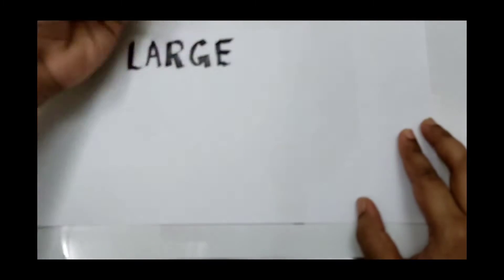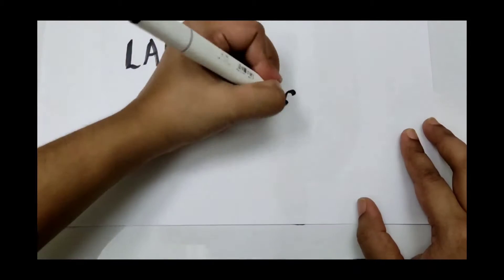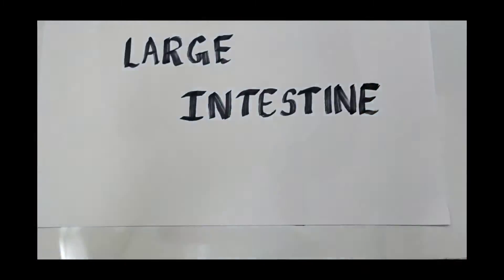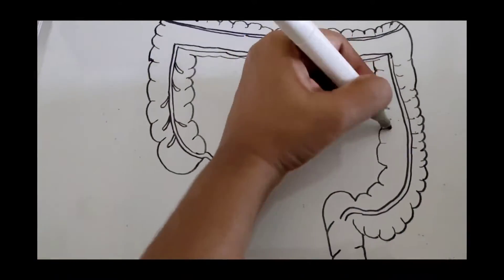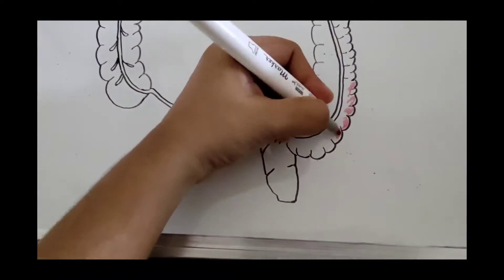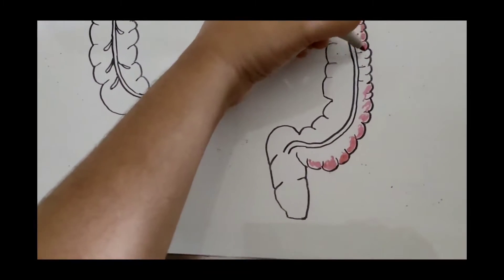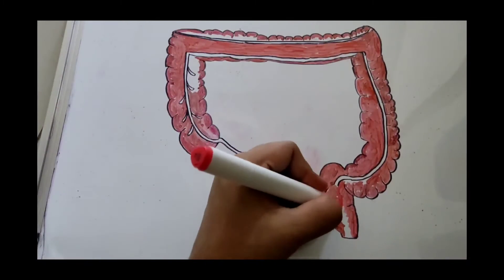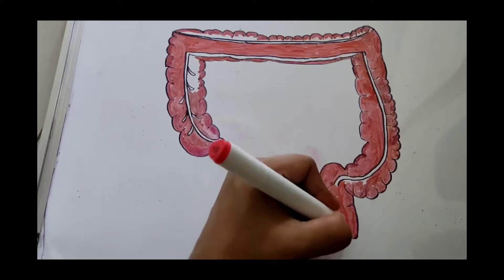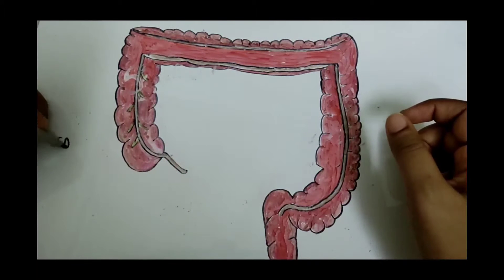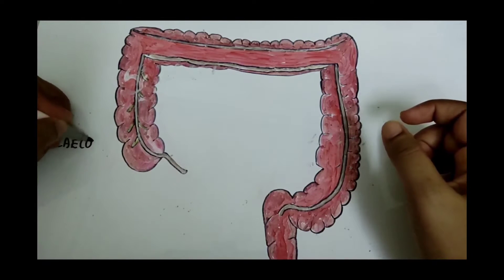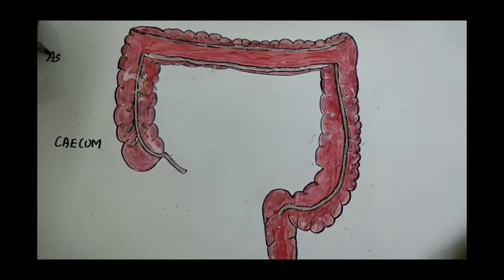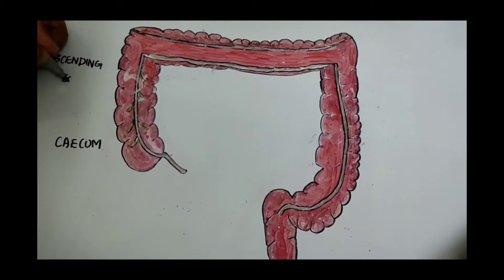Hello everyone. In this video we'll discuss the anatomy of the large intestine. Today we'll only discuss the general anatomy of the large intestine; we'll go in detail about each of the parts in the upcoming sessions. The large intestine extends from the ileocecal junction to the anus.